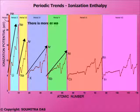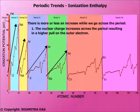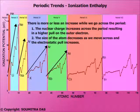There is more or less an increase as we go across the period, which can be justified as follows. The nuclear charge increases across the period, resulting in a higher pull on the outer electron. The size of the atom decreases as we move across and the electrostatic pull increases.